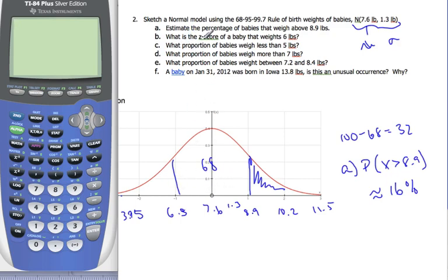So now we want to know what's the z-score of a baby that weighs 6 pounds. Well, z is equal to x minus mu over the standard deviation, which in this case, x is 6. This 6 here is minus mu is 7.6 over 1.3.